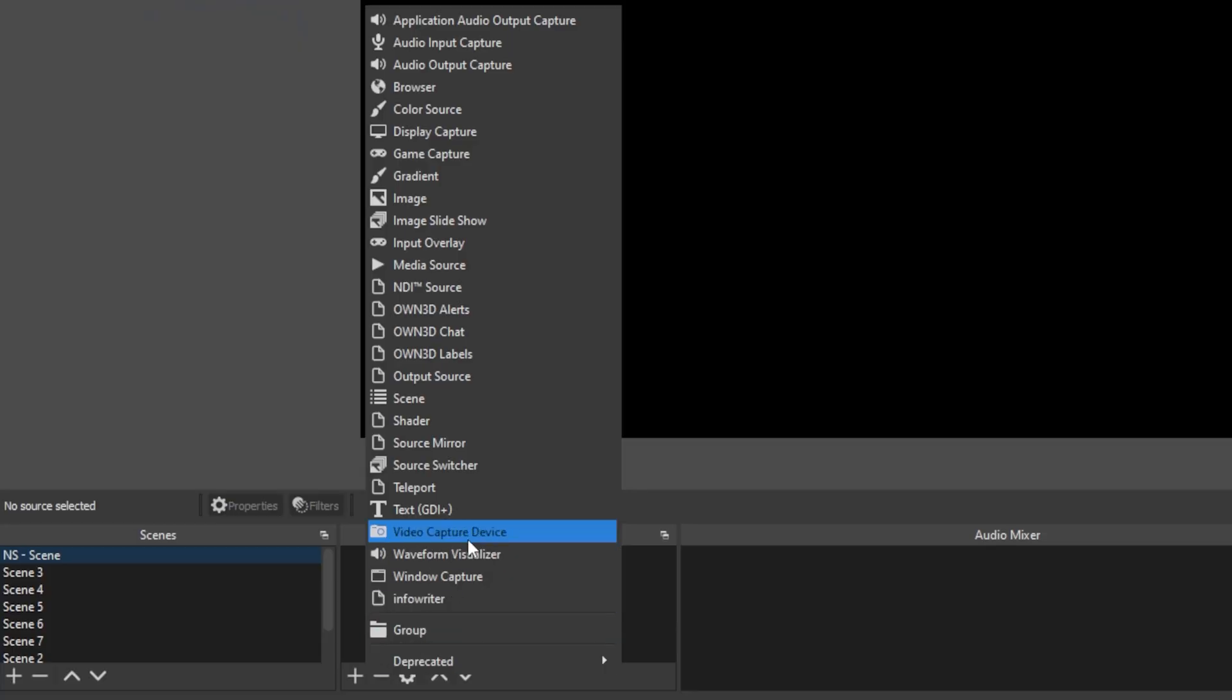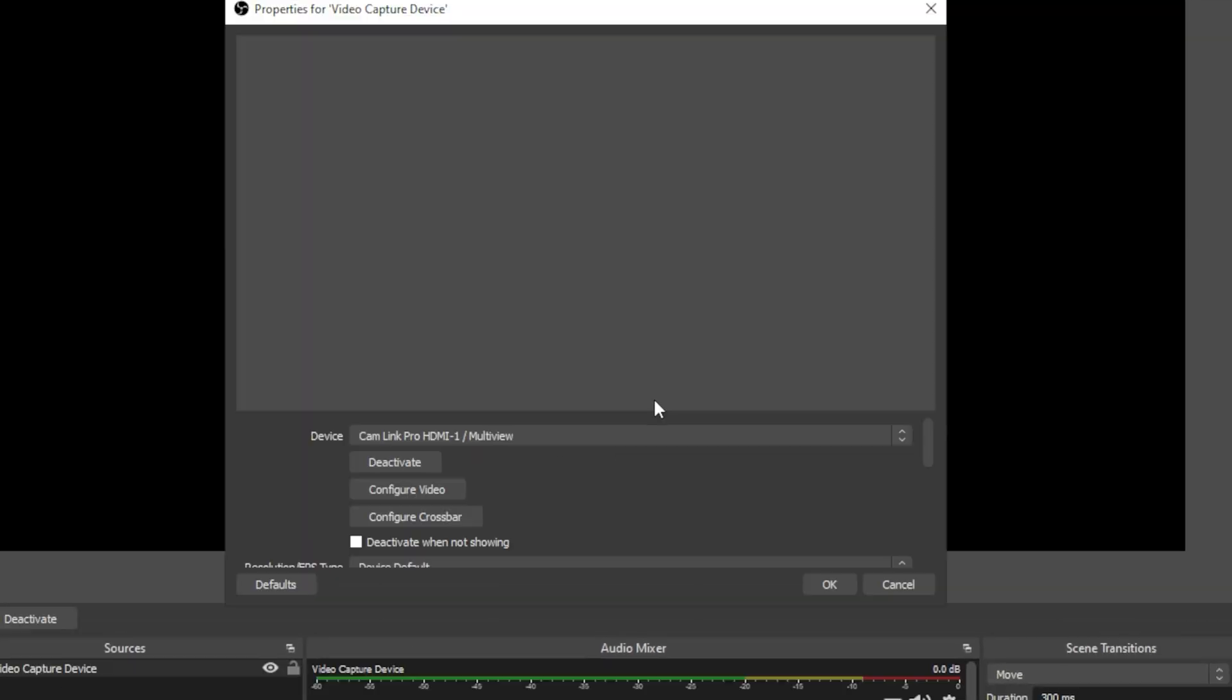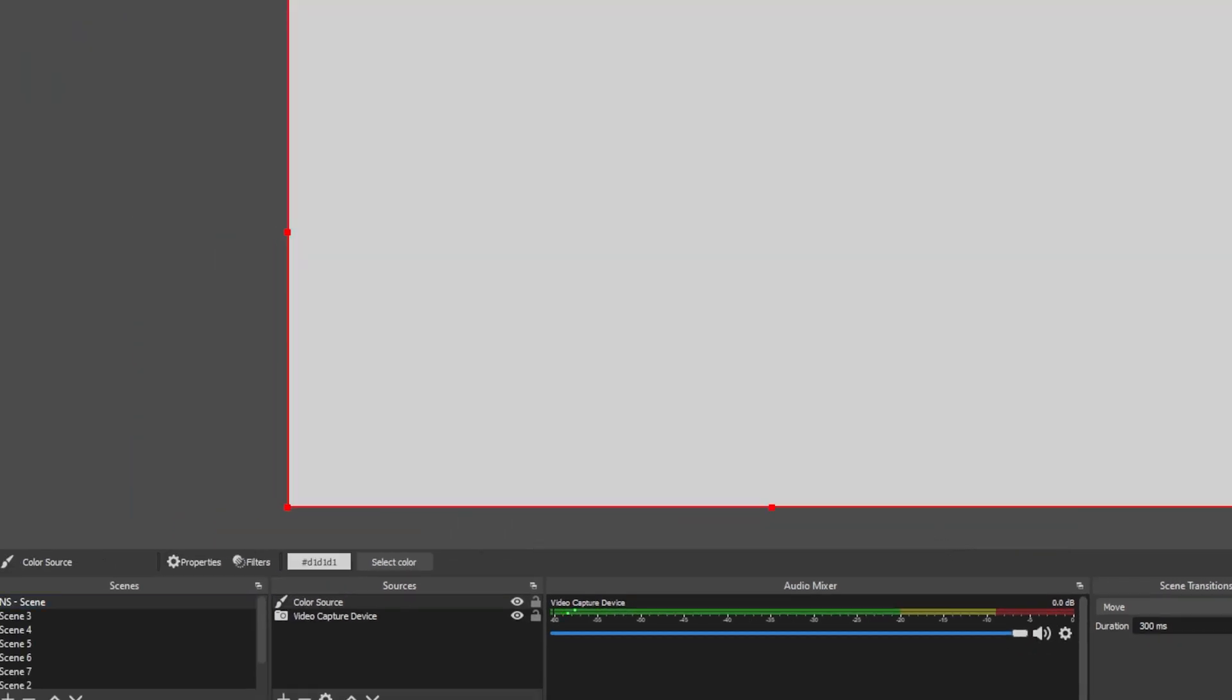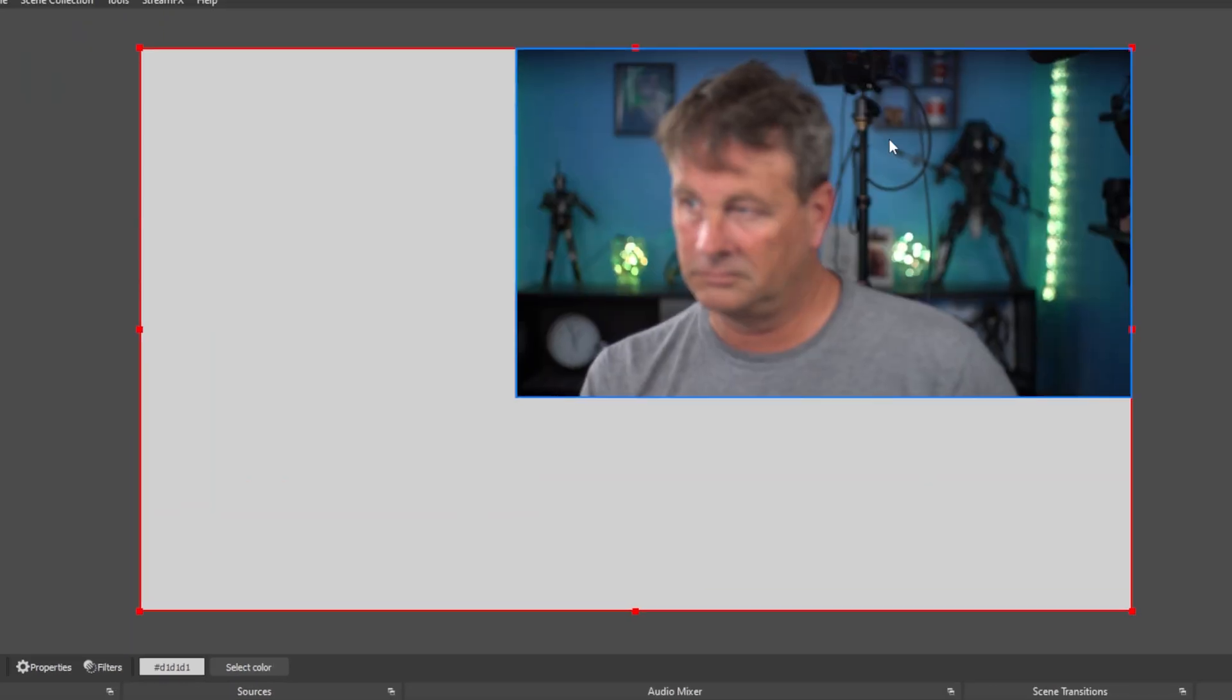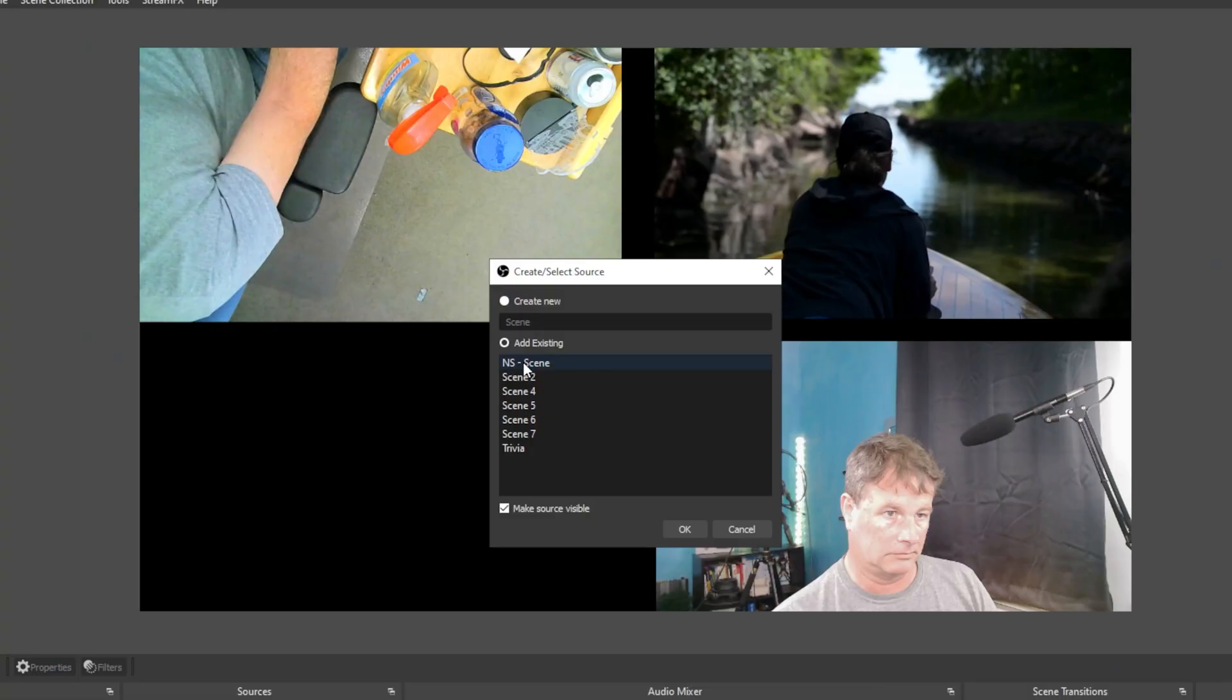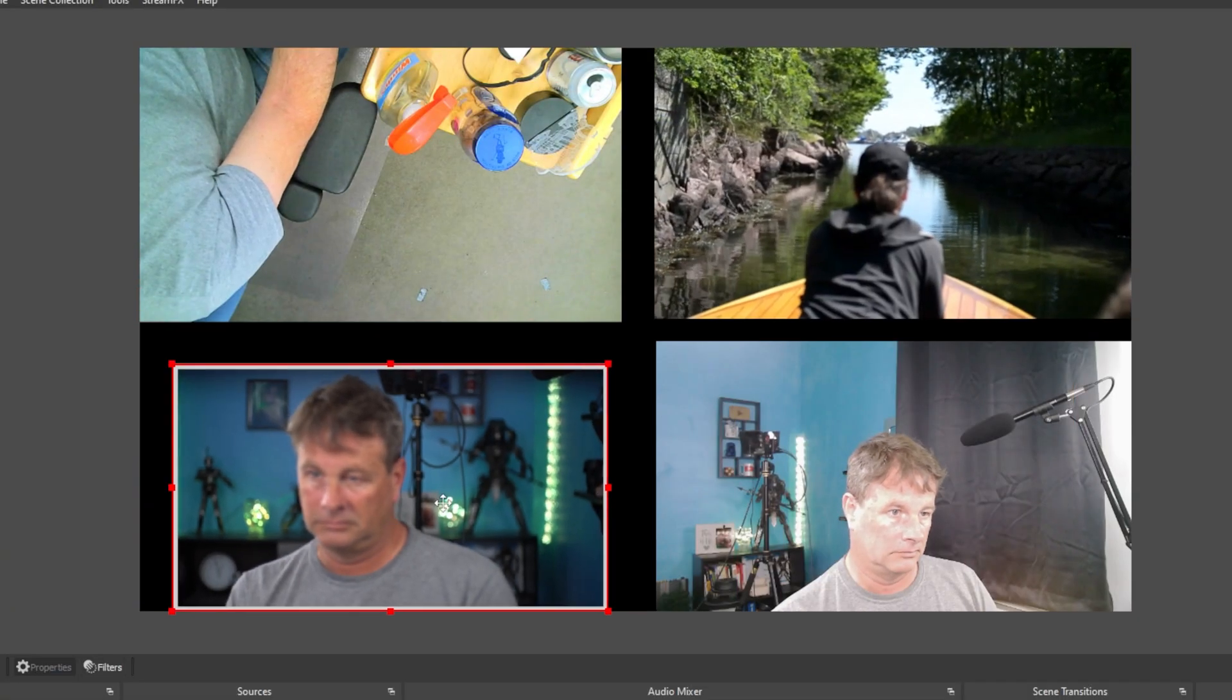Save time by just creating a camera in its own scene, exactly how you want it to look. And then just add that scene to any other scene that you want. Boom. Created once and added to any scene with two clicks.